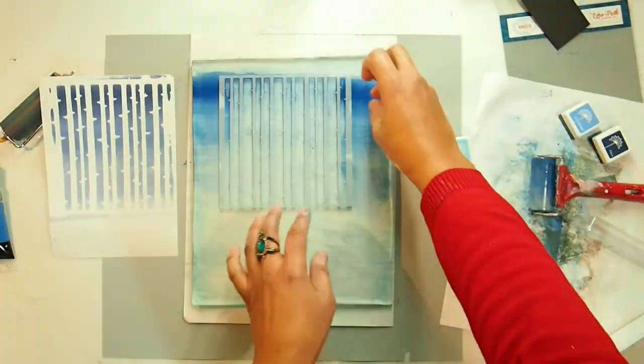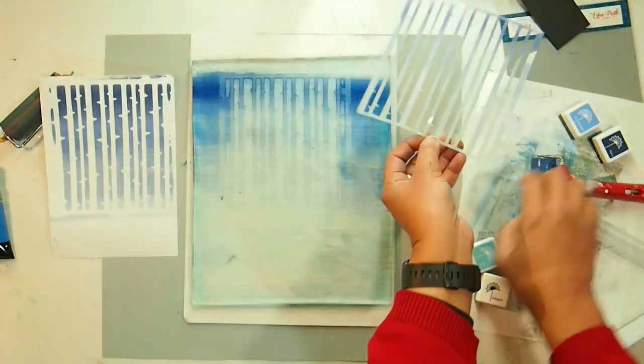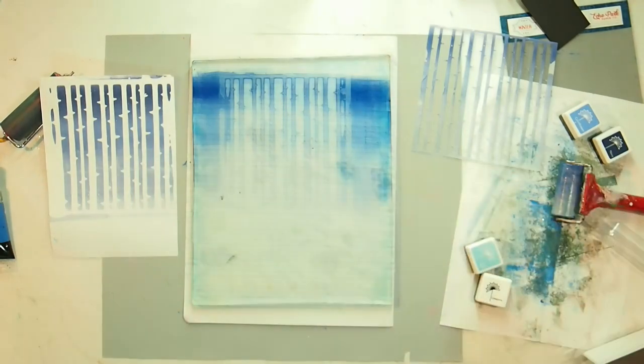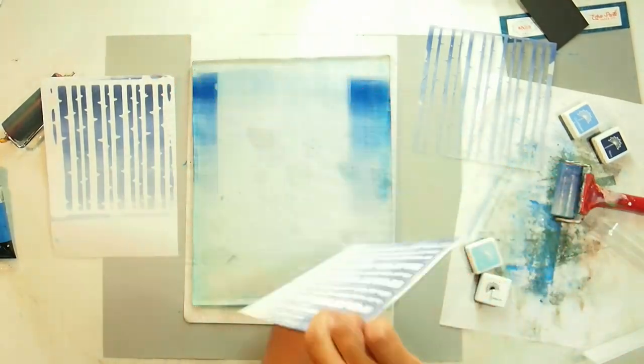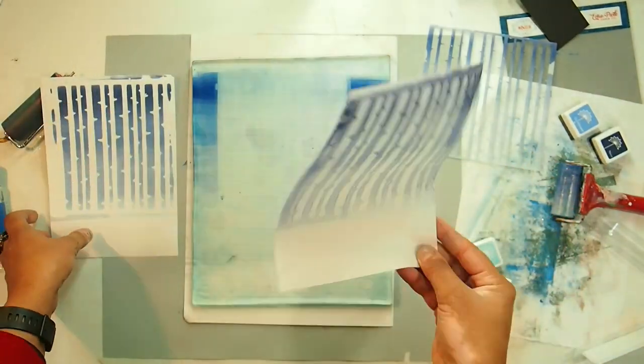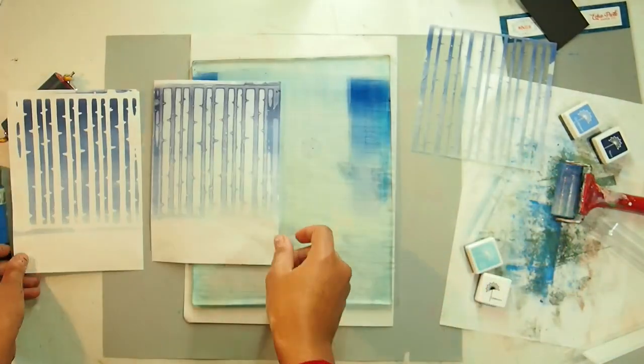And just to refresh your memory, this is what I did. I added some ink cubes and then brayed it to a nice layer, added my stencil, pulled my first print, then took the stencil off and pulled my second print.